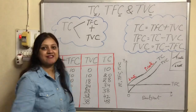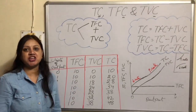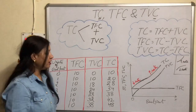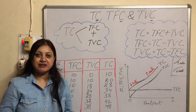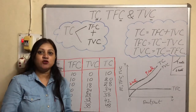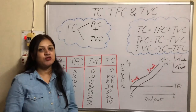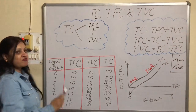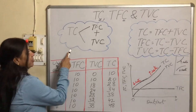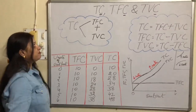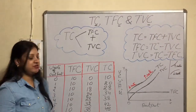Total fixed cost is that cost which does not change with a change in output. Total variable cost is that cost which changes with change in output — if output is increasing, TVC will also increase; if output is decreasing, TVC will also decrease. But total fixed cost will always remain the same at all levels of output. So we have understood the relationship between TC, TFC, and TVC: TC is the summation of TFC and TVC.